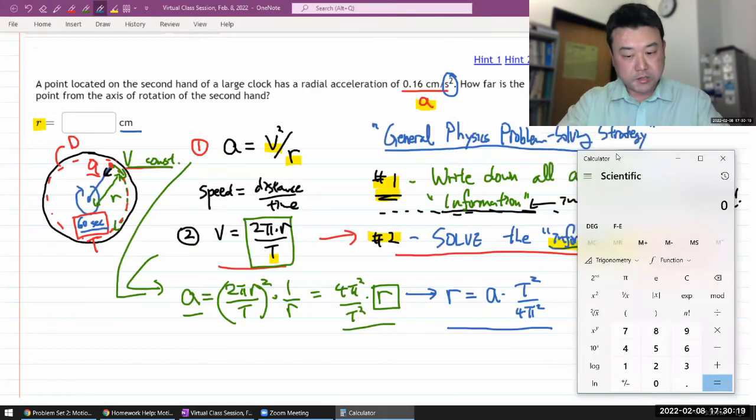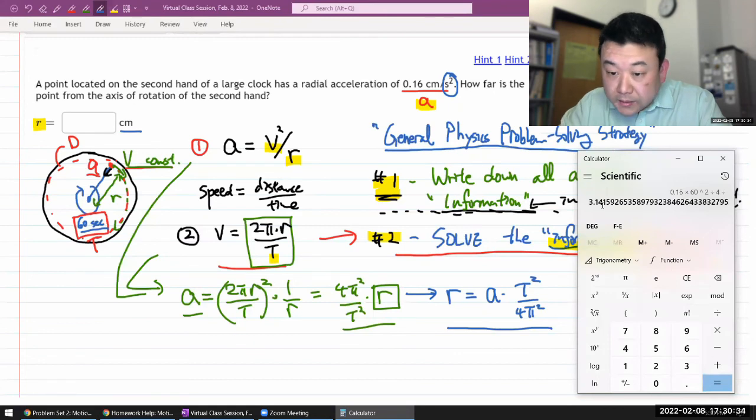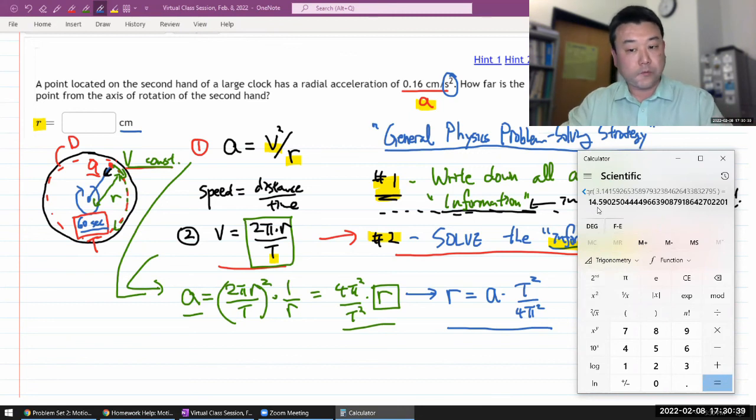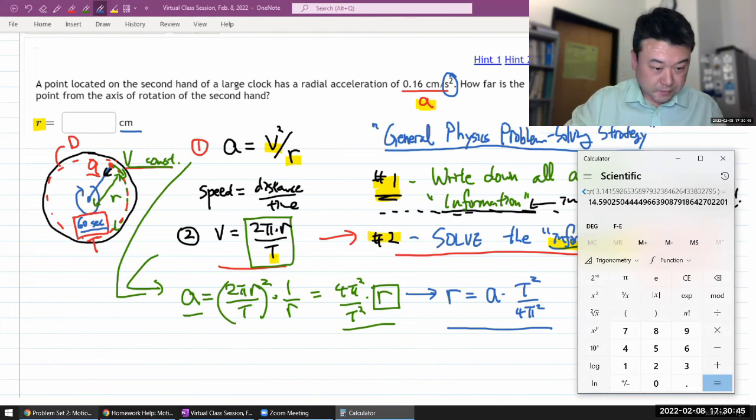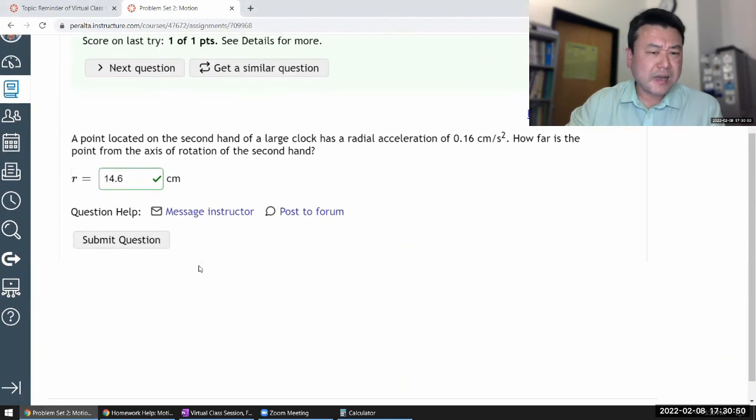So I think I have enough to just do this in calculator. Let me just do that. Plug in the numbers. Acceleration 0.16 centimeter per second squared times the time 60 seconds and then I'm squaring it. Second squared will cancel out. Divided by 4 and divided by pi squared. It says 14.6 centimeters. That seems reasonable. Let's try that. 14.6. And yeah.